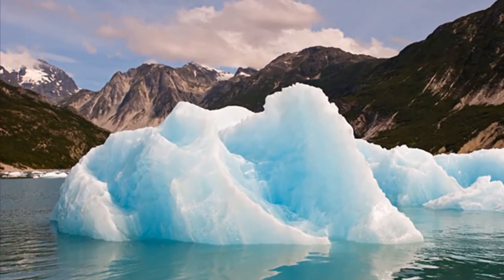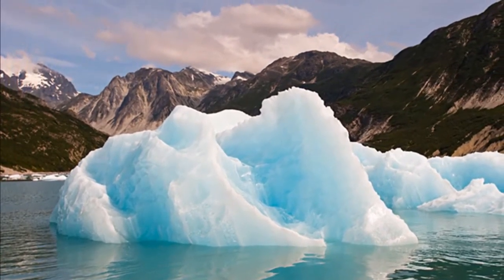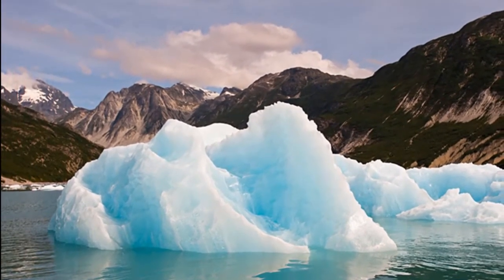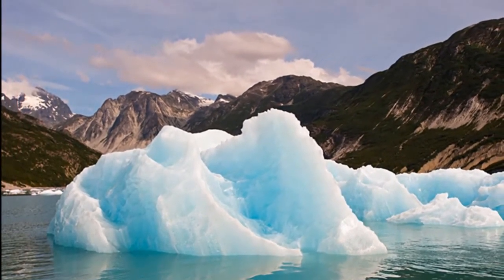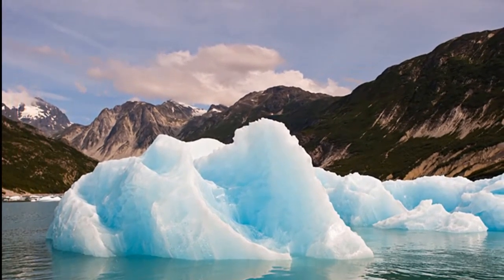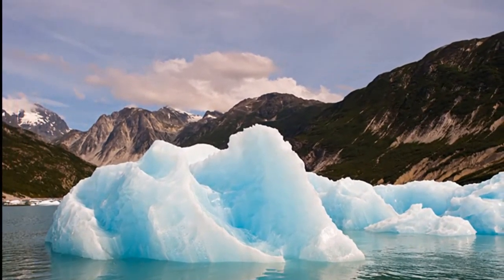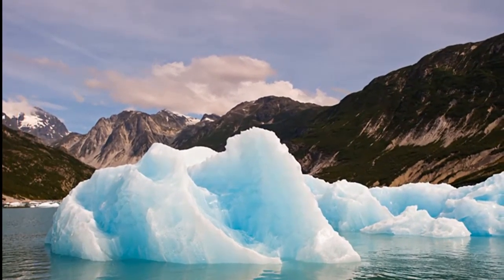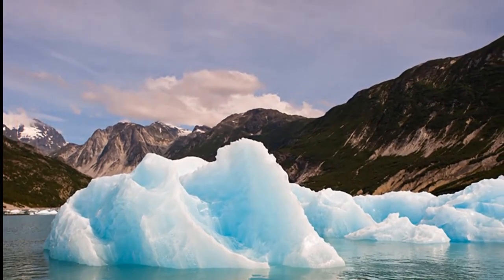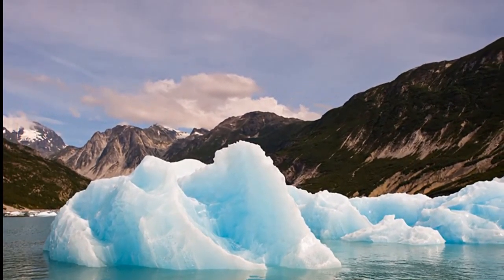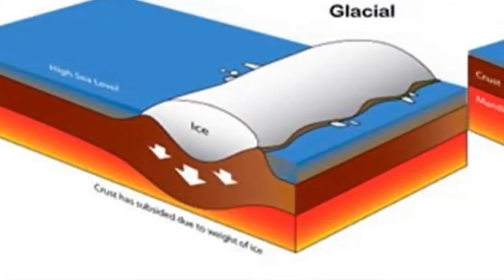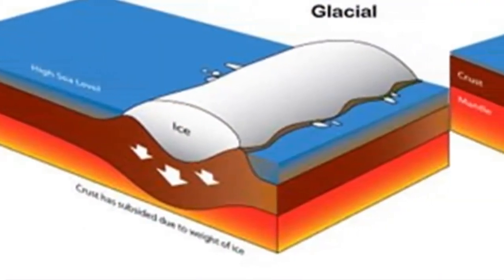Note that the thicker wooden blocks float higher than the thinner blocks. Similarly, many mountain belts stand high above the surrounding terrain because of crustal thickening. These compressional mountains have buoyant crustal roots that extend deep into the supporting material below, just like the thicker wooden blocks.